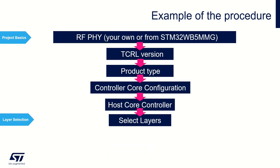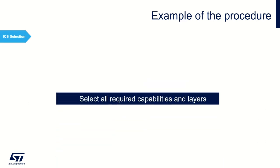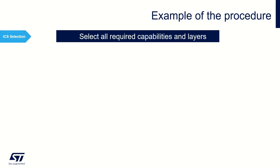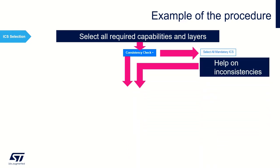Then select layers. There are predefined checkboxes linked to the STM module — let them be or select your preferences. Hit Save and continue to ICS selection. In the ICS selection tab, you can check all required capabilities and layers, or if sufficient, leave them. You must now hit the consistency check button. It helps you to solve all inconsistencies. You may use Select All Mandatory ICS to select the mandatory ones, and by the inconsistencies help, you can resolve all of them.